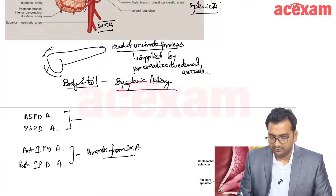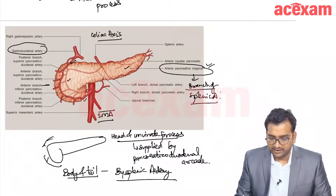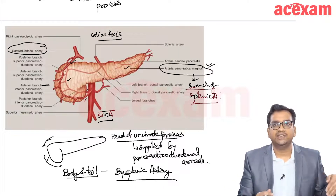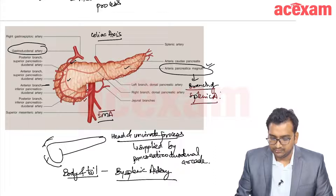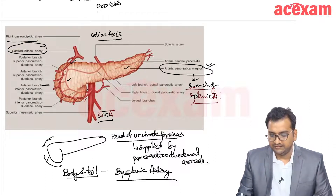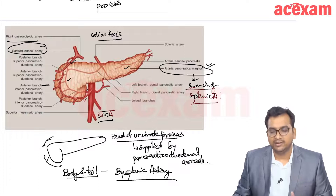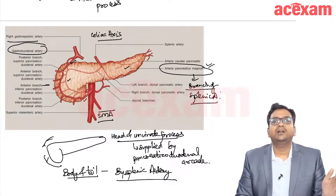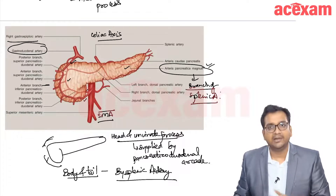The anterior superior and posterior superior pancreaticoduodenal arteries are from the GDA (gastroduodenal artery). The gastroduodenal artery gives off the right gastroepiploic artery and then terminates by dividing into the anterior superior and posterior superior pancreaticoduodenal arteries. The GDA is a branch of the common hepatic artery, which gives the hepatic artery proper and GDA, and GDA ultimately supplies the pancreas.